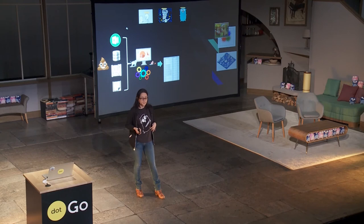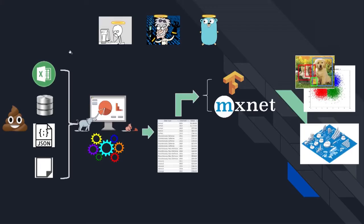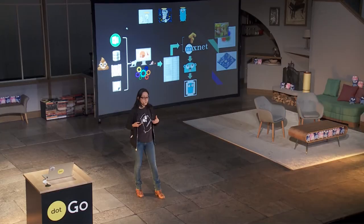Once you have normalized your data, you can start thinking about creating your prediction model. You can use one of the fashionable tools, for example TensorFlow or MXNet. Once you have your prediction model, you can use this model to make predictions for new data using Go libraries, and you can generate beautiful graphs and make some maps of our data using GoNum.